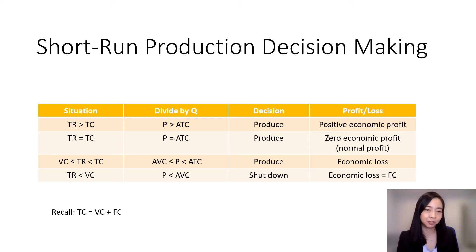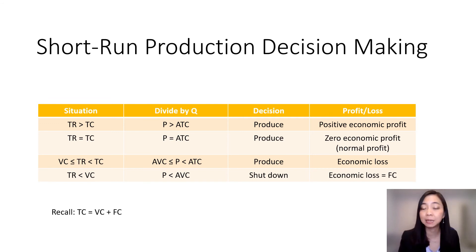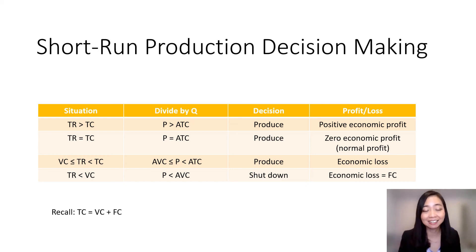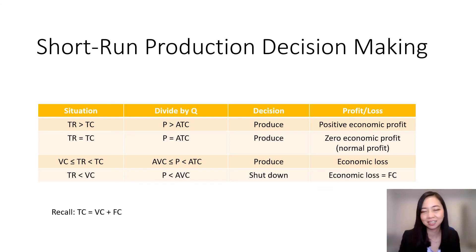The third situation: if your total revenue is lower than total cost but at least covers the variable cost, then your price will be in between average total cost and average variable cost. At this time, you should produce even though you're suffering economic loss. Finally, if your total revenue is lower than variable cost — that means your price is so low that it drops below the average variable cost — at this time, you should shut down because it doesn't make sense for you to produce. And your economic loss is exactly equal to the fixed cost.